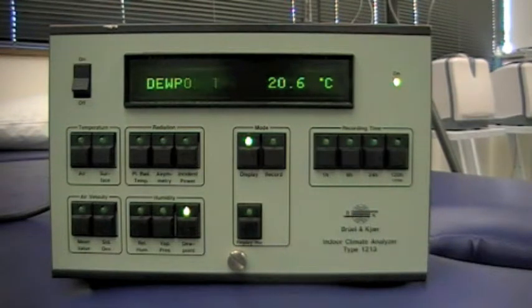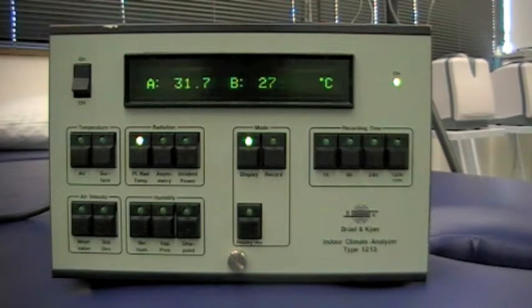This is displaying the radiant temperature. You've got two readings there, A and B. A is the temperature that's pointing towards the hot surface of the window where the sun shines there. And that's recording a higher temperature than the B surface which is pointing into the room. And you'll see that the B temperature is in fact close to the air temperature that we looked at a few moments ago.